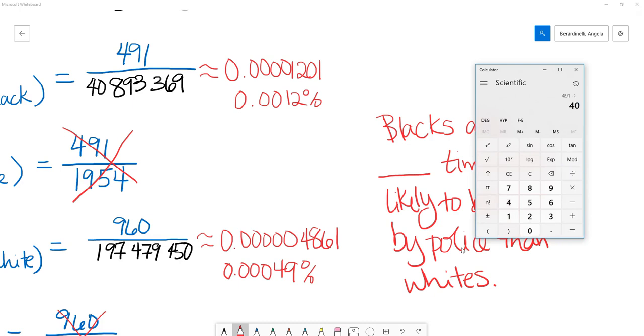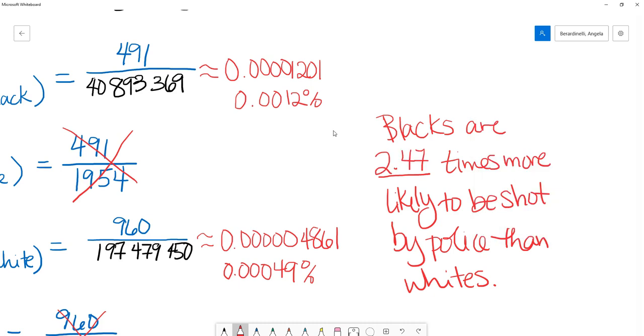491 divided by 40,893,369, that's the probability here, divided by this probability, 960 divided by 197,479,450. So 2.47 times more likely. Of course there are other factors that you can adjust for, but if we're solely basing this on race, then we've found from the data directly that blacks are 2.47 times, so almost two and a half times more likely to be shot by police than whites.